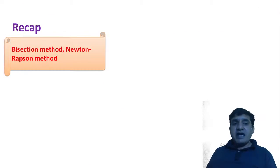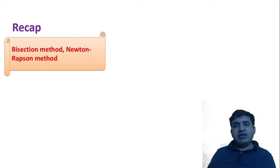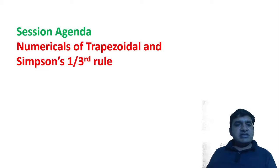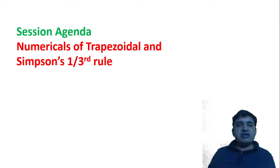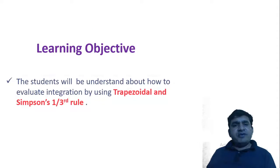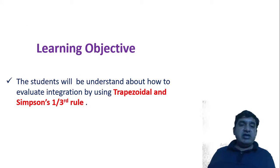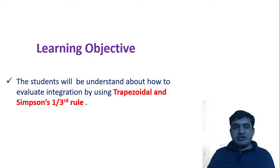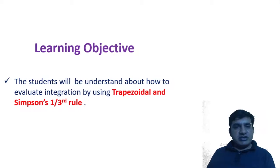In the previous lecture, we discussed about the bisection method and Newton-Raphson method, which is used to determine the root of an equation. In this lecture, we have to see the numericals of the trapezoidal and Simpson's one-third rule, which is used to find the integration of a given function. After attending this lecture, the student will be able to evaluate the integration by using these two rules.